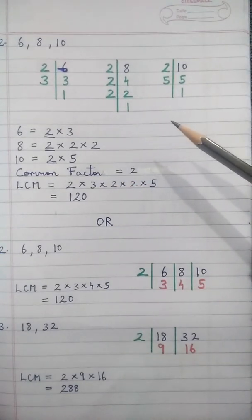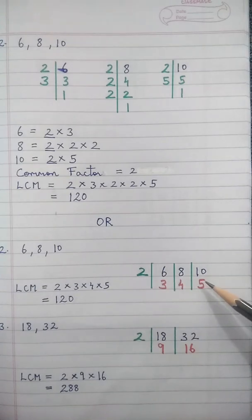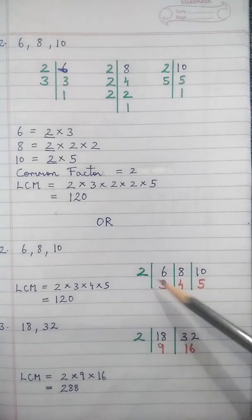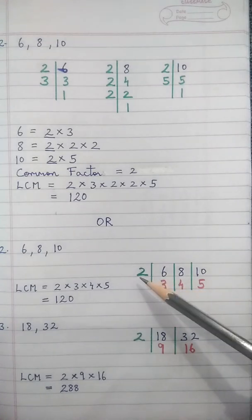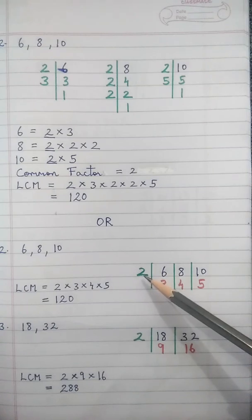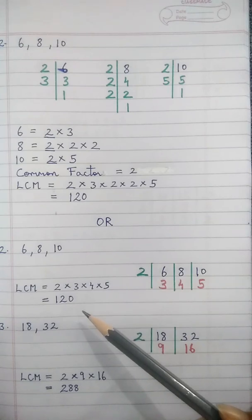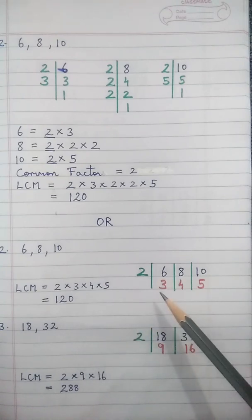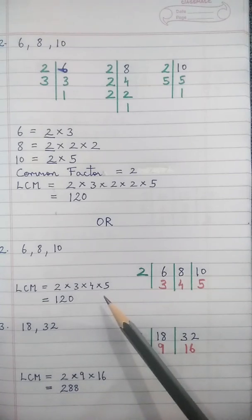Taking 6, 8, and 10 together: all three numbers are divisible by 2, so 2 threes are 6, 2 fours are 8, 2 fives are 10. LCM is the left-hand side factor 2 multiplied by the remaining bottom row: 2 into 3 into 4 into 5, which is 120. This is how we factorize 6, 8, and 10 to find LCM.